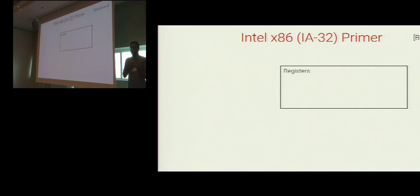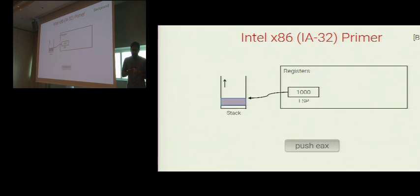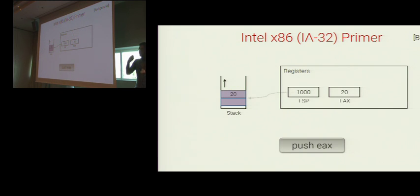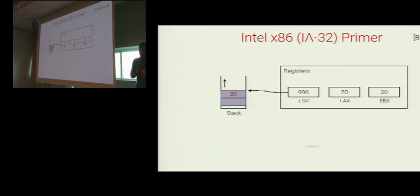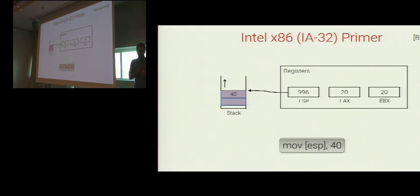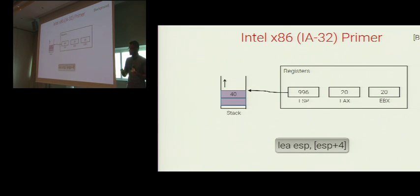For those unfamiliar with IA-32, here is a brief primer. ESP is the stack pointer register. The push instruction pushes an operand on top of the stack, updates ESP, and the stack grows upwards. For instructions with more than one operand, the operand on the left is the destination. Square brackets denote memory operands — so one instruction writes the value 40 in the memory location pointed to by ESP. However, for an LEA instruction (load effective address), square brackets denote the effective address. This instruction increments ESP by 4. That is all the IA-32 you need to know.